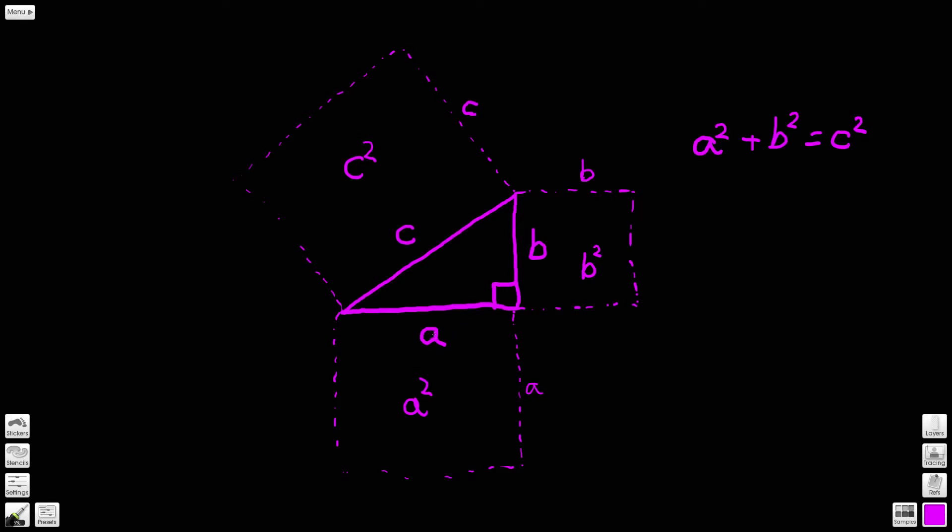But for the time being it's enough to know that if we take a and multiply it by itself, take b and multiply it by itself, and then add those two values together, we will get the value of c multiplied by itself.